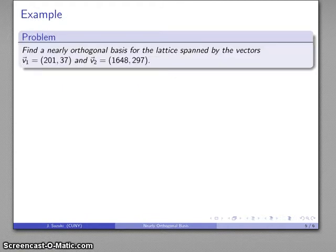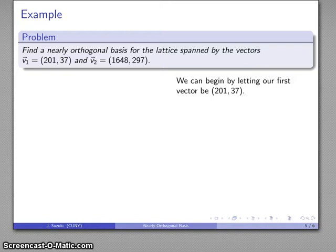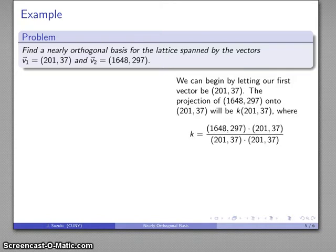For example, I have this lattice that's going to be spanned by two vectors: V1 = (201, 37) and V2 = (1648, 297), and I want to find a nearly orthogonal basis for that lattice. So I'm going to proceed by picking one of our vectors to be our first basis vector, and I'm going to project the second basis vector onto the first. And that projection is going to be K(201, 37).